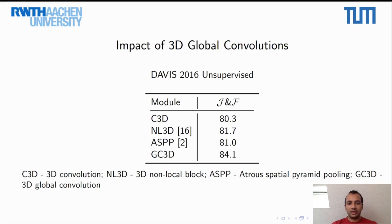To analyze the effectiveness of our 3D global convolutional module, we compare it against various other modules. For this experiment, we replace the global convolutional module in the decoder with a 3D convolutional layer, a non-local block, and an atrous spatial pyramid pooling layer, and then compare them on the Davis 2016 unsupervised video object segmentation task. As can be seen from the table, the global convolutional module outperforms all the other modules by a large margin on the J&F score.